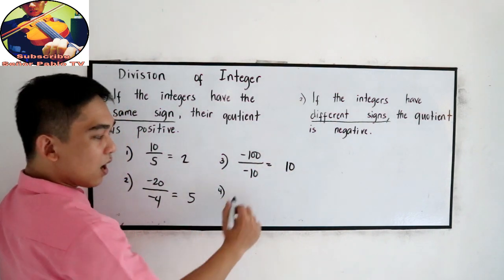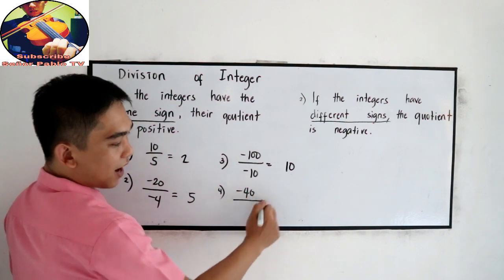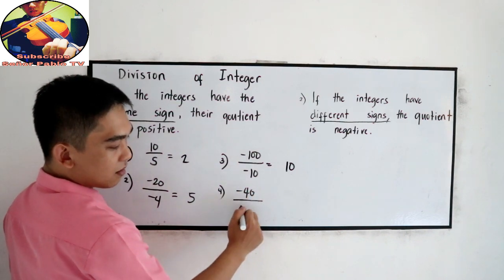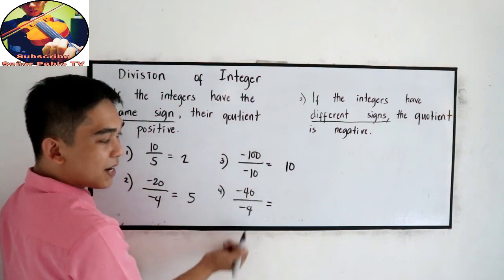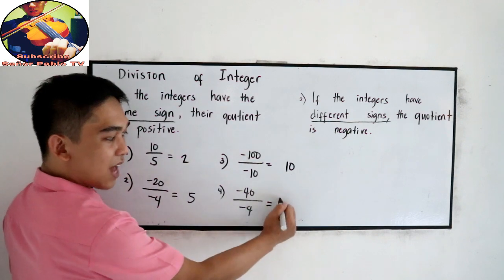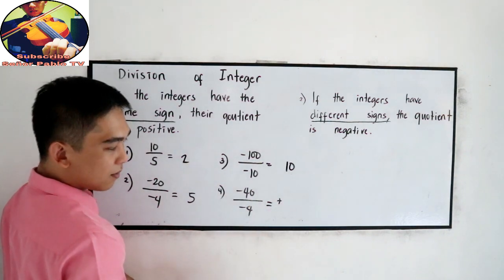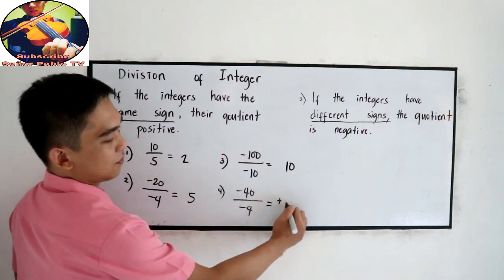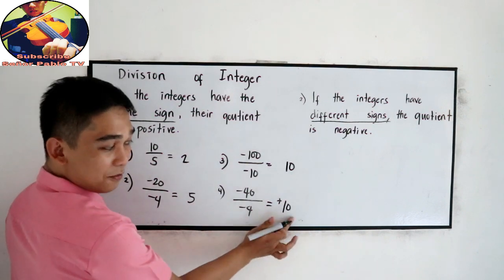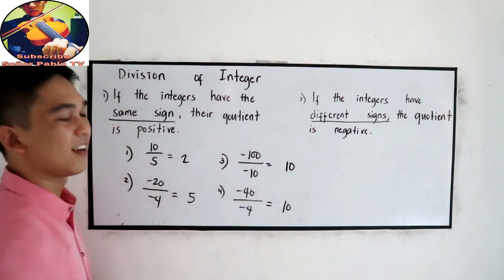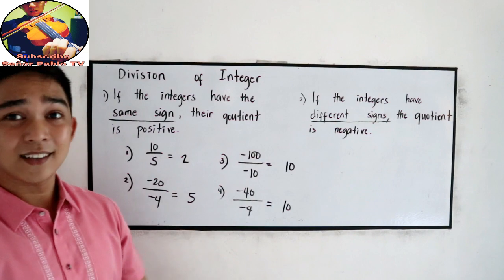Last example: negative 40 divided by negative 4. Negative divided by negative, so that is positive. 40 divided by 4 is, of course, 10. Positive 10, or simply 10.